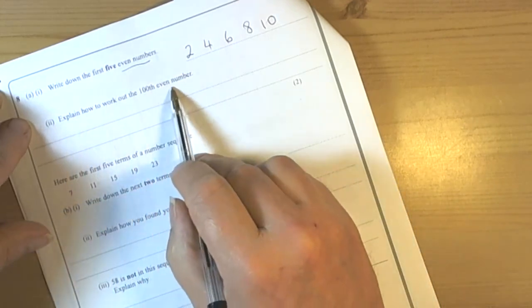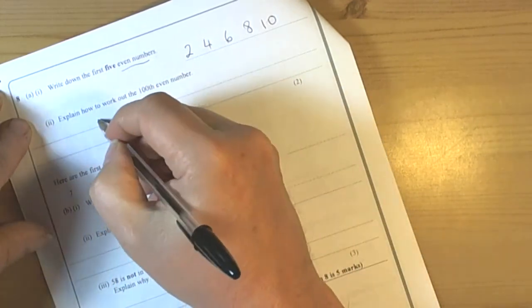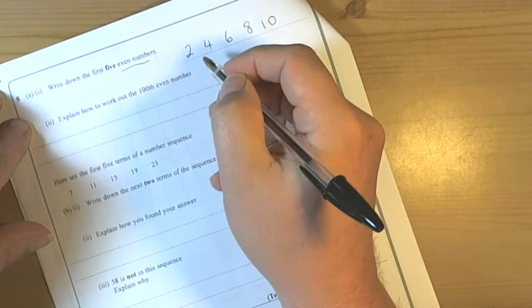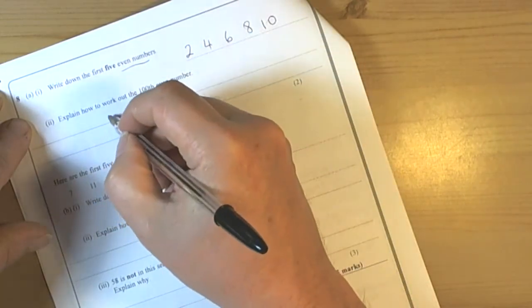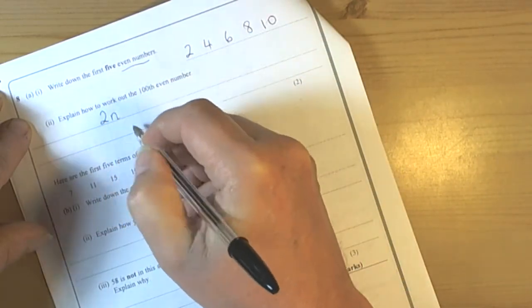Explain how you would work out the hundredth even number. Well like we said the even numbers are anything in the two times table. So that has a general rule of 2n.